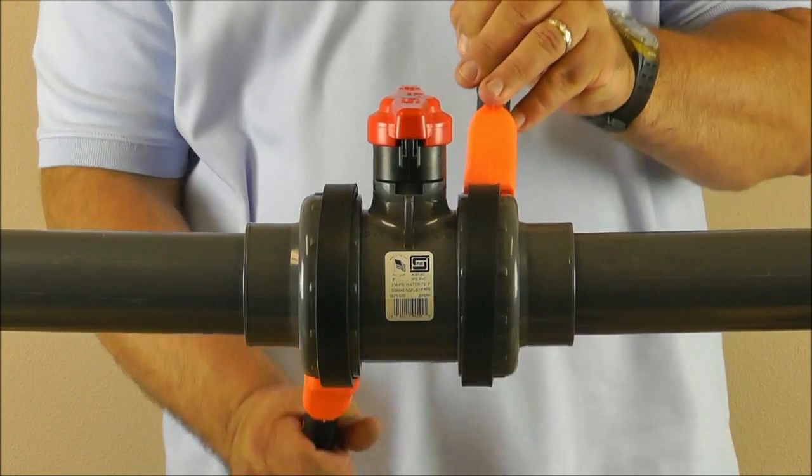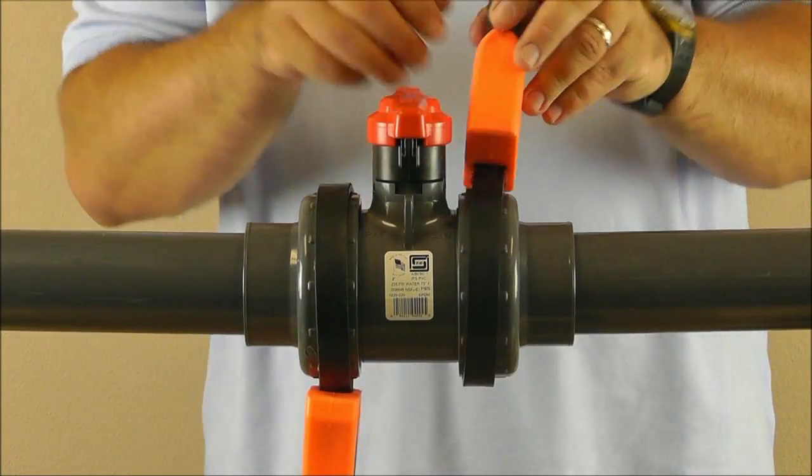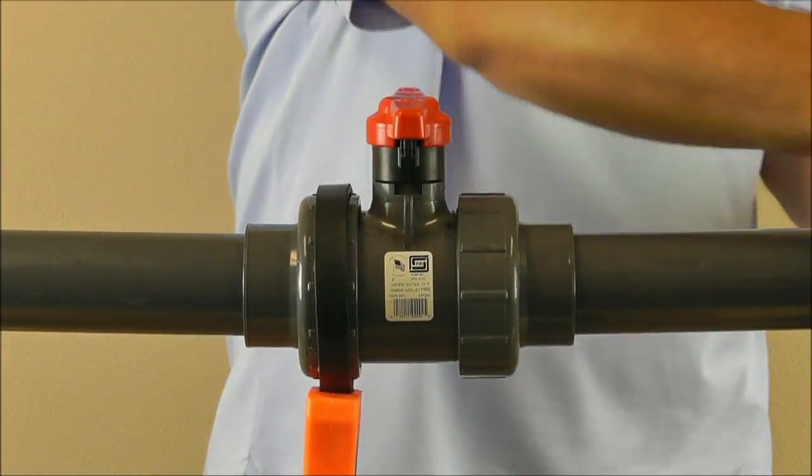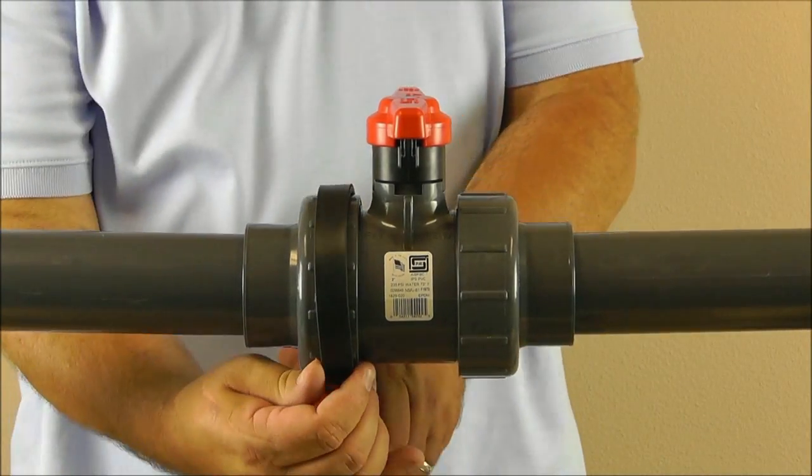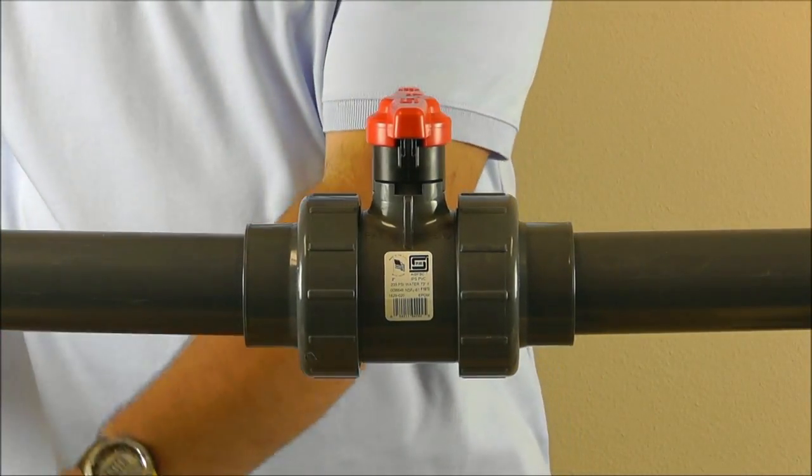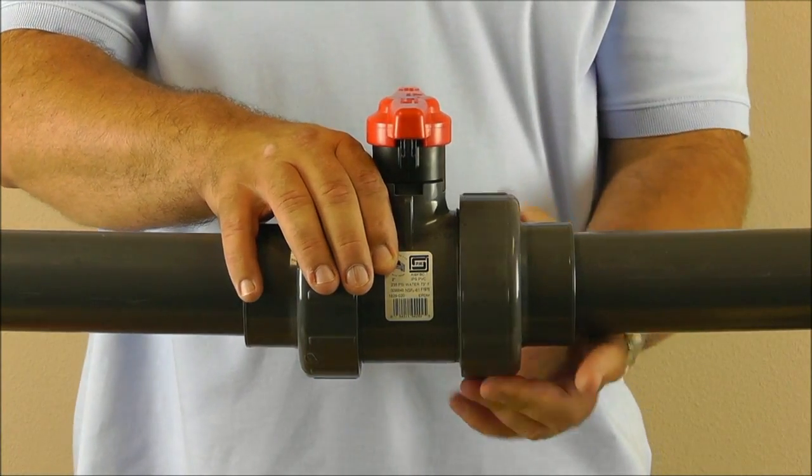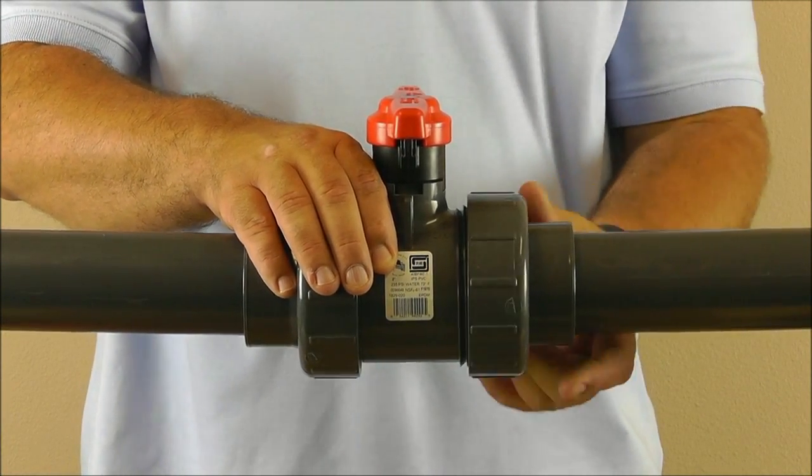Your installation begins by shutting down and draining the system or line the valve is installed within. Back off union nuts by hand or with strap wrenches and remove valve cartridge. Place the cartridge on a clean solid surface to work on.